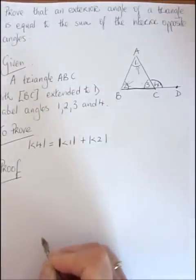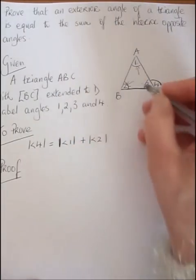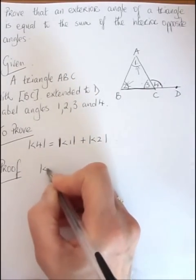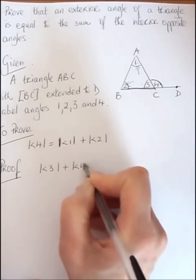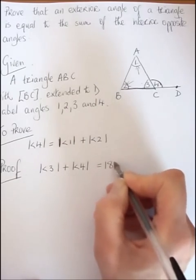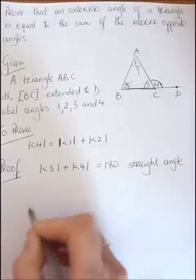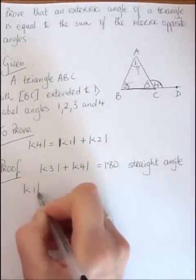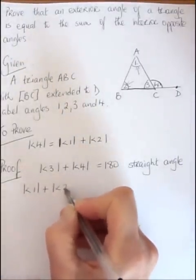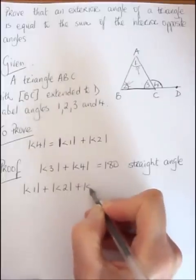So the proof. Let's start off with our prior knowledge. 3 and 4, the measure of those two angles, equal 180 degrees. And from our previous theorem, we know that 1, 2 and 3 are also equal to 180 degrees.